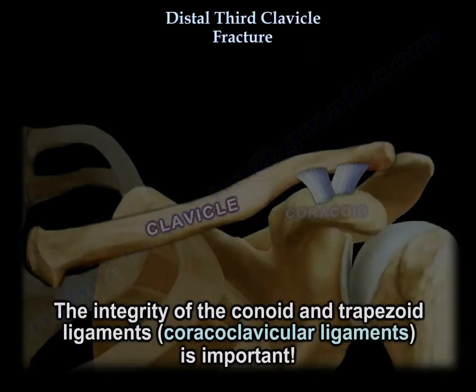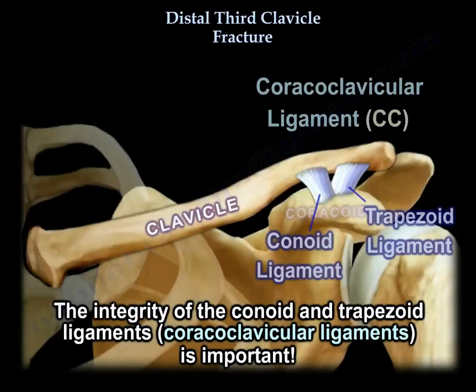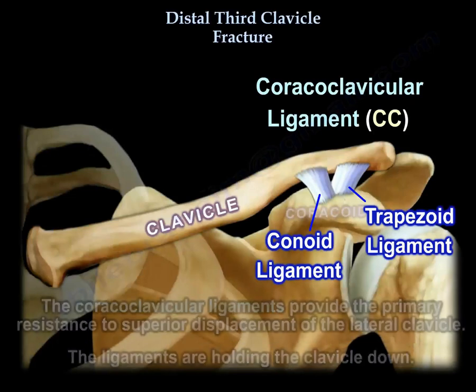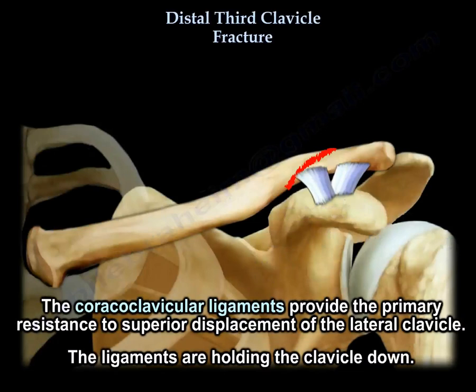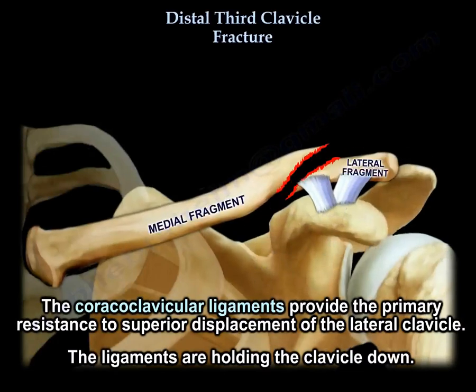The integrity of the conoid and trapezoid ligaments — the coracoclavicular ligaments — is important. They provide the primary resistance to superior displacement of the lateral clavicle; essentially, they hold the clavicle down.